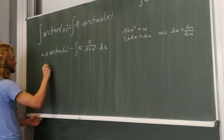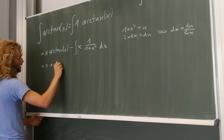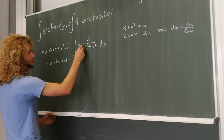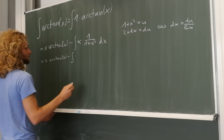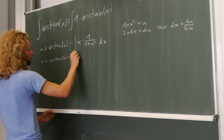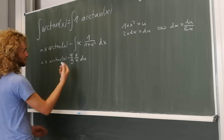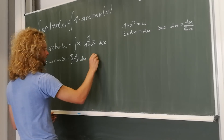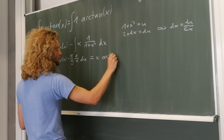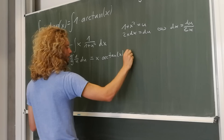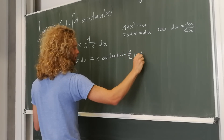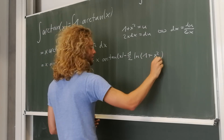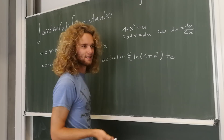Plugging the substitution in, we get x times arctan(x) minus the integral of x times (1/u) times (du over 2x). The x terms cancel, leaving one half times the integral of 1/u du. This integral is the natural logarithm of u, so we get x times arctan(x) minus one half times the natural logarithm of (1 plus x squared), plus constant C.